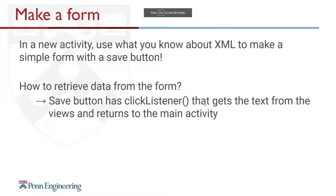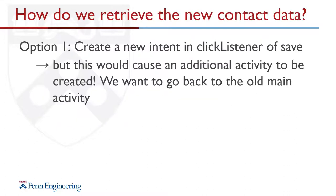Next we make a new activity and change its XML to be a form with a save button. To retrieve data from the form, we set a click listener on the save button that retrieves text from the EditText views, then somehow return to MainActivity passing those text values.